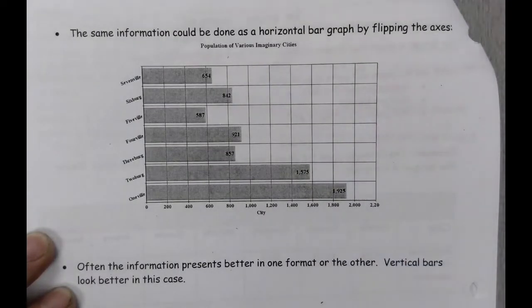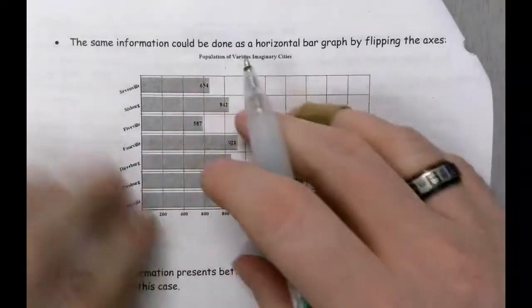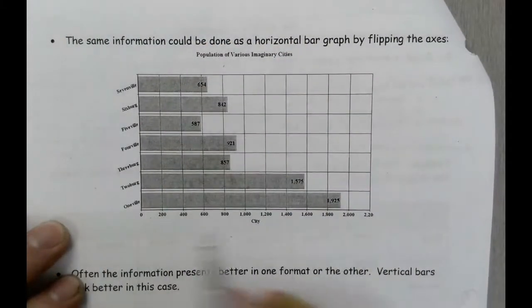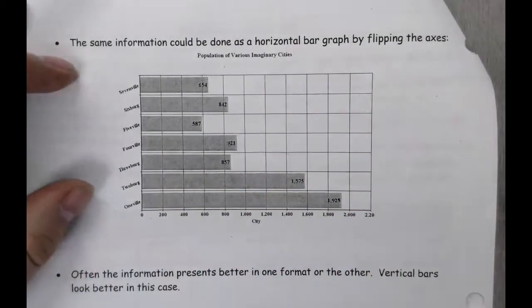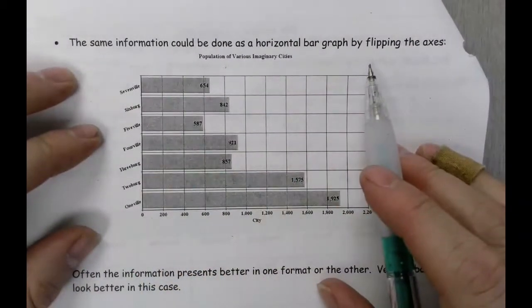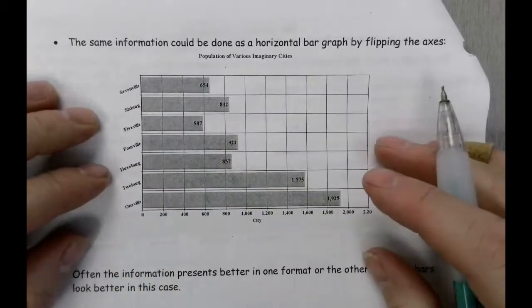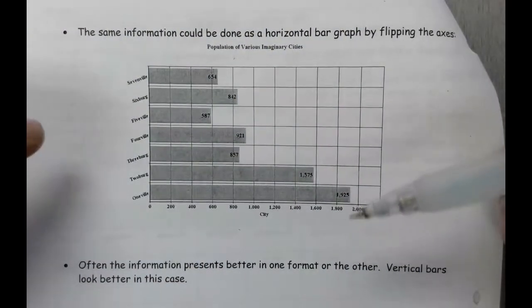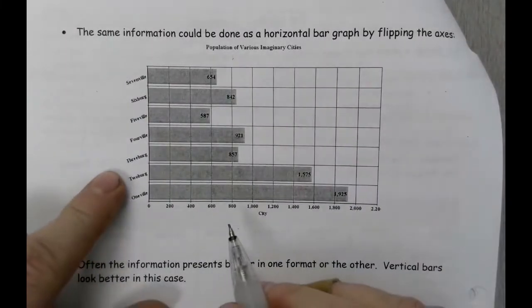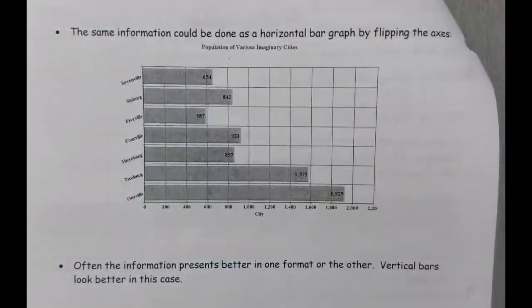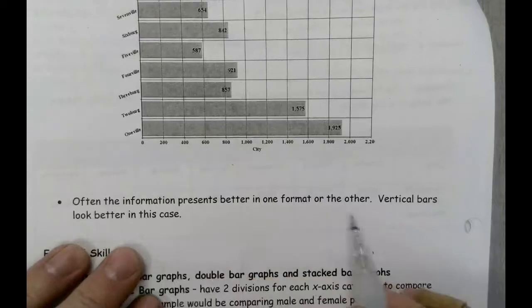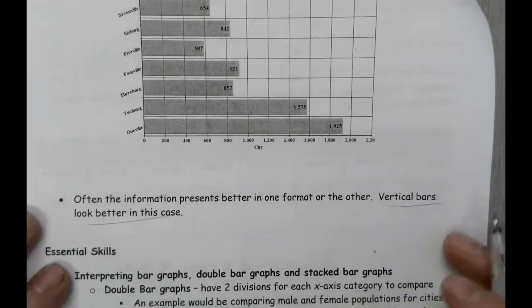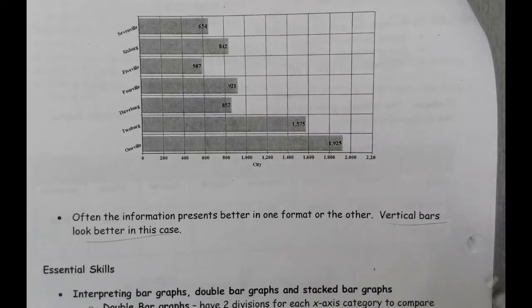Just like I mentioned, this is that same graph but we've flipped it — putting the independent variable on the y-axis and the dependent variable along the x-axis. We can display the information as a horizontal bar graph, and sometimes people like the way that looks better. It's not meant to confuse you about the independent and dependent variable. In this particular case, the vertical bars probably communicate the information a little bit better, but the horizontal version is another option.